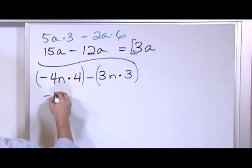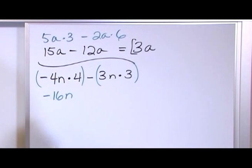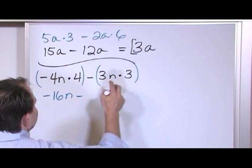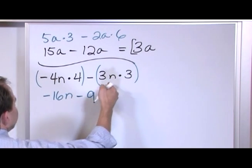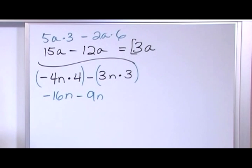So negative 16n comes along for the ride. He's multiplied by everything else too. You can't just drop him. Minus 3 times 3 is 9n. He doesn't just drop away because he's also involved as well.